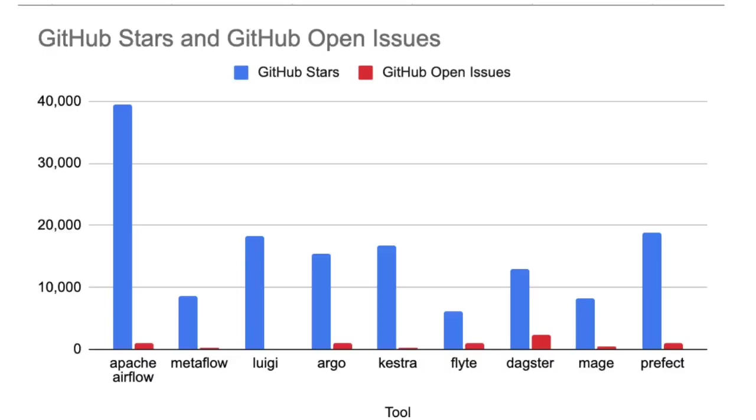I made a chart of GitHub stars and open issues for each of the remaining tools. GitHub stars can be a little misleading — people complain companies buy stars — but generally, stars combined with open issues give us an idea of how big the community is and how much activity there is. If there are hardly any open issues, that probably means there's not a big community using it. We can use these two metrics together to assess how active a tool is.